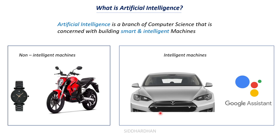A Tesla car is far more intelligent than a normal bike because it can drive by itself — it requires only minimal input and manages the rest on its own. This is what we call an intelligent machine: one that can mimic the behavior of human beings and make decisions on its own. Another example is Google Assistant — the conversations are so smooth that it kind of feels like a person talking. ChatGPT is another advanced chatbot with far more features.